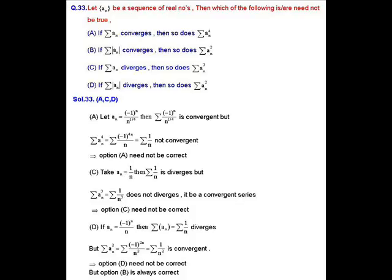For option C: if summation a_n is divergent, then summation a_n³ is also divergent. This statement is also incorrect. For example, take a_n = 1/n — this series is divergent, but summation a_n³ = summation 1/n³, which is clearly convergent, not divergent. So option C is also not true.